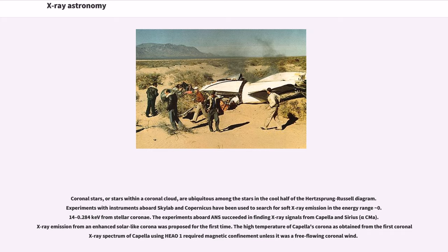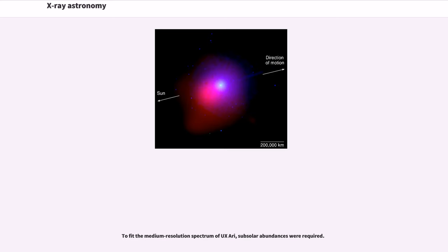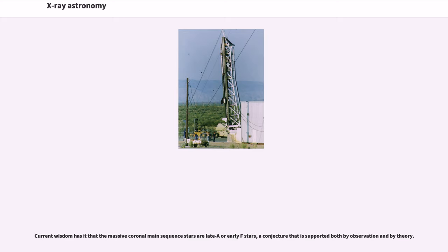X-ray emission from an enhanced solar-like corona was proposed for the first time. In 1977 Proxima Centauri is discovered to be emitting high-energy radiation. In 1978, Alpha Centauri was identified as a low-activity coronal source. With the operation of the Einstein Observatory, X-ray emission was recognized as a characteristic feature common to a wide range of stars covering essentially the whole Hertzsprung-Russell diagram. Current wisdom has it that the massive coronal main-sequence stars are late A or early F stars.